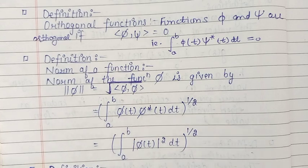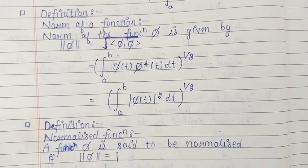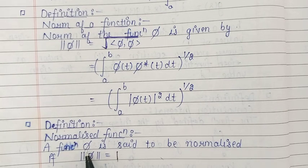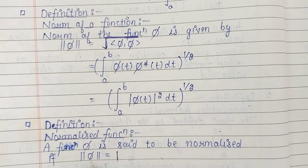The last definition is that of a normalized function. A function phi is said to be a normalized function if the norm of the function phi equals one.